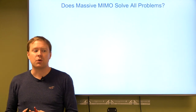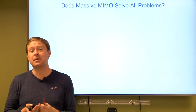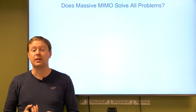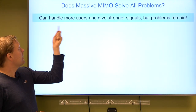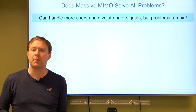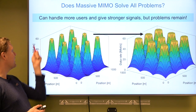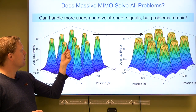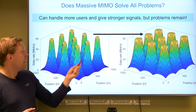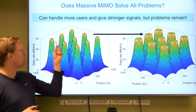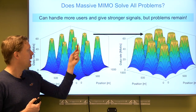Does this mean massive MIMO solves all problems in wireless? I would be happy to say that — massive MIMO is something Linköping University is famous for and we have written the two main textbooks on the topic — but it doesn't solve all the problems. You can handle more users and give them stronger signals, but many problems remain. At some positions users have a strong signal and good data rate; at many other locations the signal is weak and data rate is low.